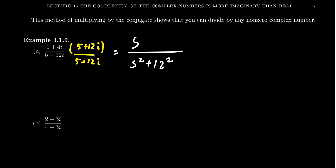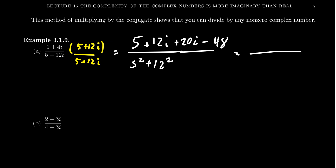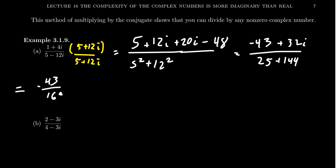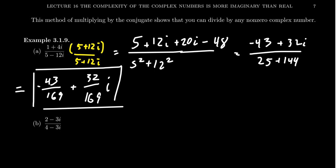In the numerator, it takes a little more effort as we FOIL this out. You get 1 times 5, then 1 times 12i, then 4i times 5, and then 4i times 12i, which is negative 48 since i squared is negative 1. Combining like terms in the numerator: 5 minus 48 gives negative 43, and 12i plus 20i gives 32i. In the denominator, we get 25 plus 144 equals 169. Writing this in standard form, we get negative 43 over 169 plus 32 over 169 i.